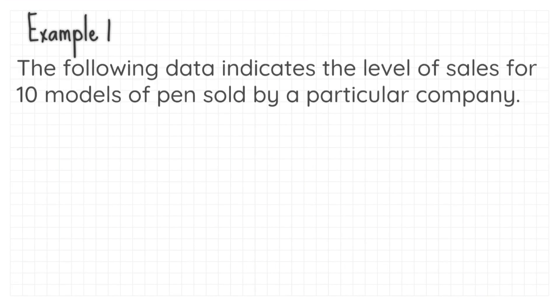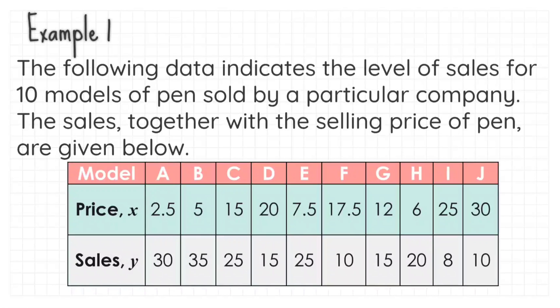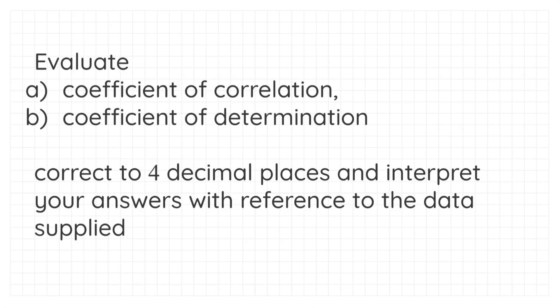Example 1. The following data indicates the level of sales for 10 models of pens sold by a particular company. The sales together with the selling price of pens are given below. Evaluate A. Coefficient of correlation B. Coefficient of determination correct to 4 decimal places and interpret your answer with reference to the data supplied.